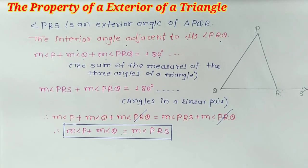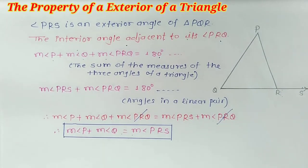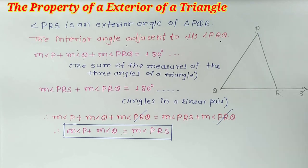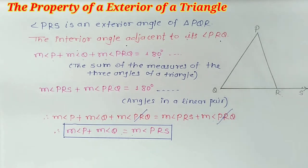That means the measure of an exterior angle of a triangle is equal to the sum of the measures of its remote interior angles.